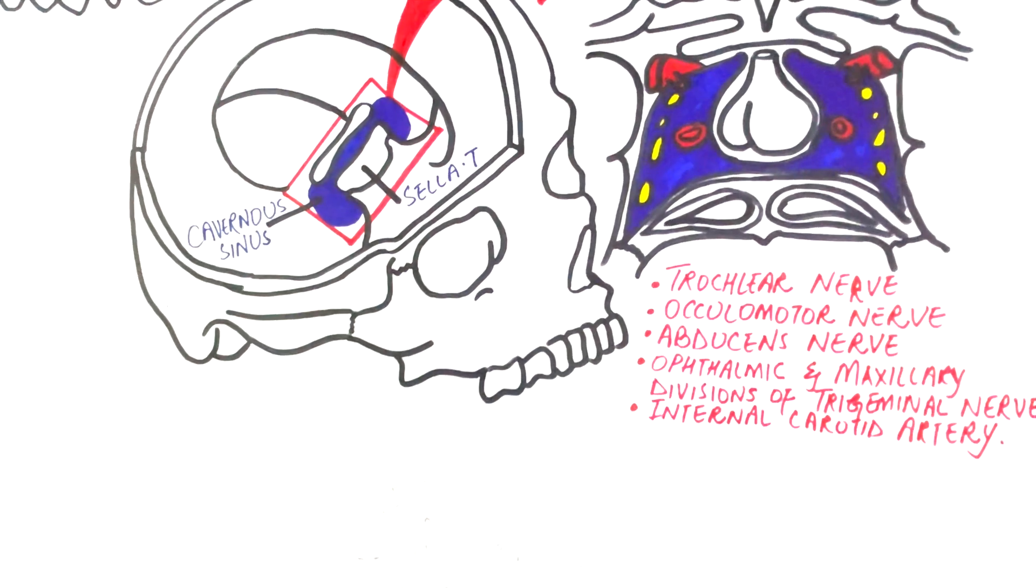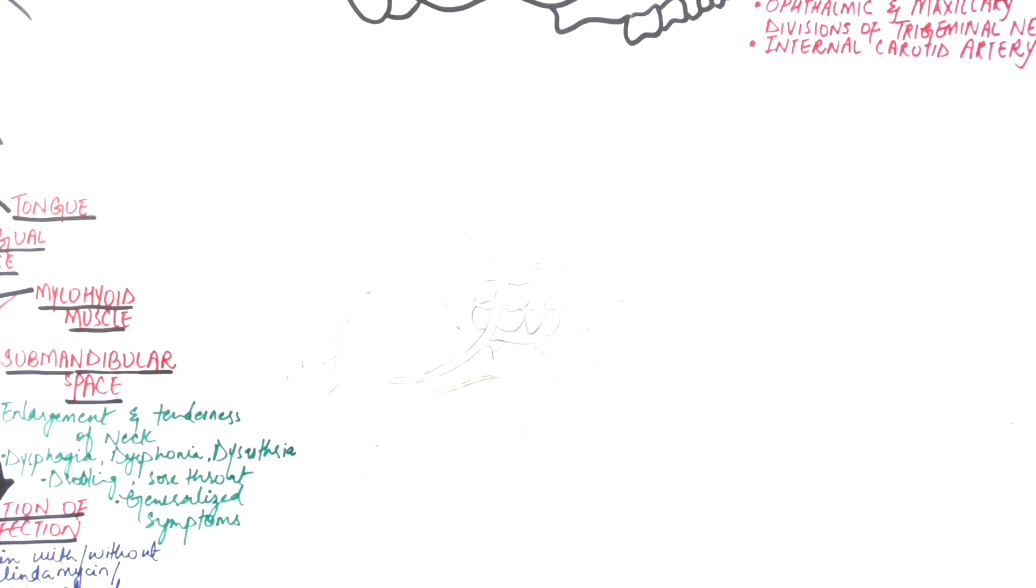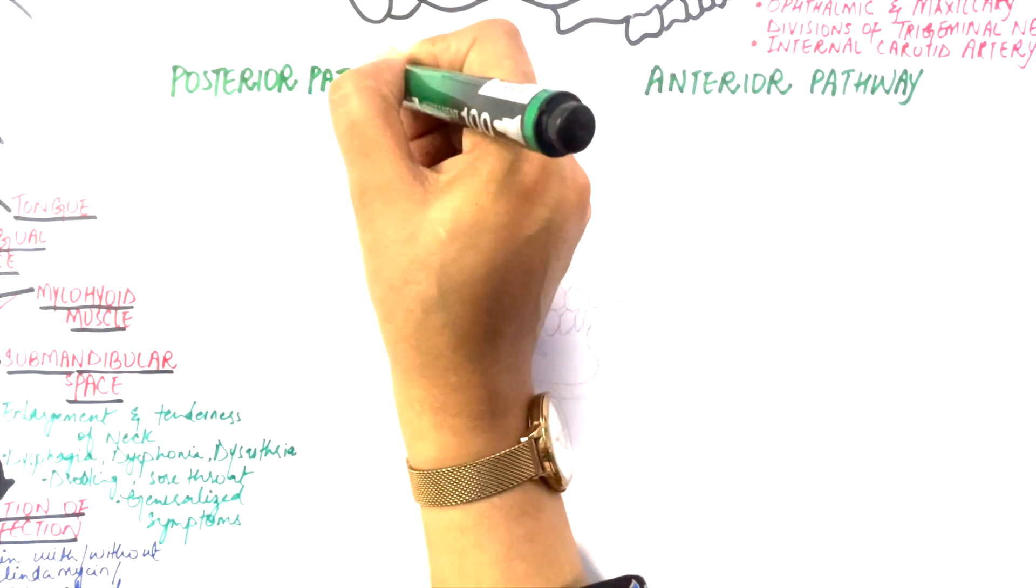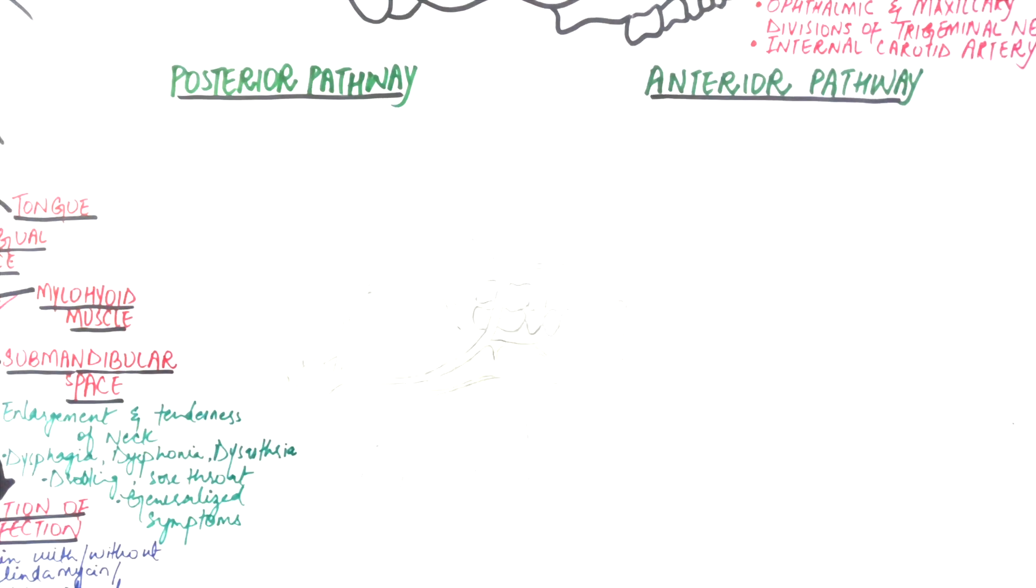Let's look at the pathways of infections that can lead to cavernous sinus thrombosis. Cavernous sinus thrombosis can occur through an anterior or a posterior pathway. Let's draw a diagram and look at both pathways.